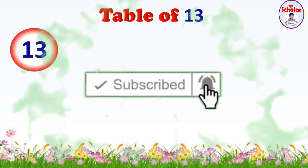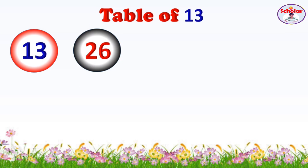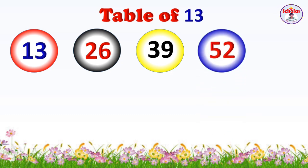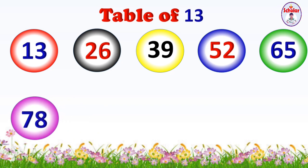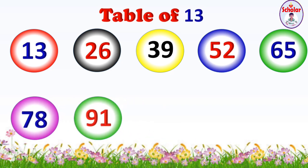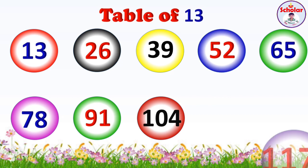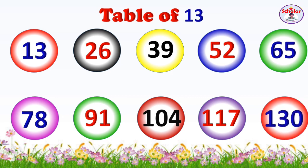Table of 13: 13×1=13, 13×2=26, 13×3=39, 13×4=52, 13×5=65, 13×6=78, 13×7=91, 13×8=104, 13×9=117, 13×10=130.